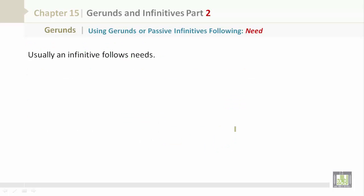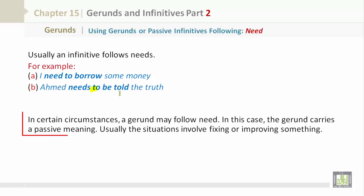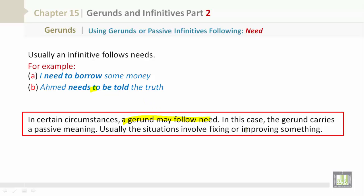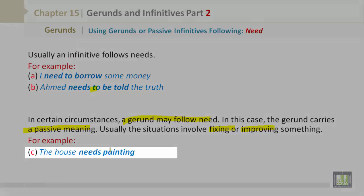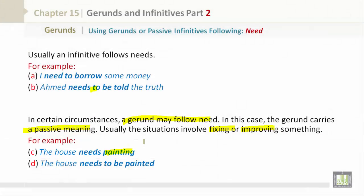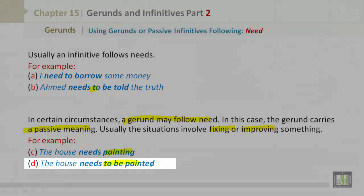Usually an infinitive follows needs. For example, I need to borrow some money. Ahmed needs to be told the truth. In certain circumstances, a gerund may follow need. In this case, the gerund carries a passive meaning. Usually the situation involves fixing or improving something. For example, the house needs painting equals the house needs to be painted.